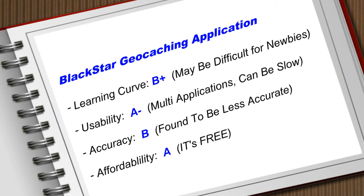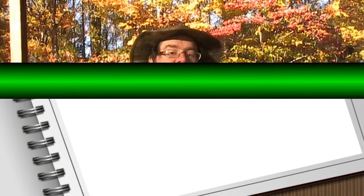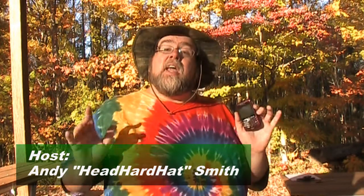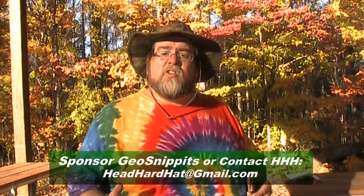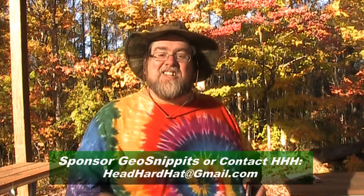Learning curve: B plus — may be difficult for newbies to get going, but there is a PDF file available. Usability: A minus — it uses so many different applications and can really slow you down. Accuracy: B — found many different applications that were more accurate. And affordability: an A — it is a free application. I highly recommend giving it a try because it is a free application. Load it onto your BlackBerry phone and give it a spin. If you're starting off with geocaching, I think you're going to find it a fully functional application to go out there and get some geocaches for yourself.